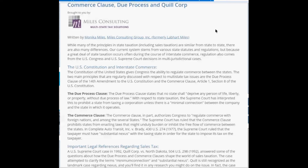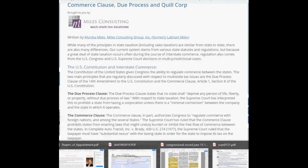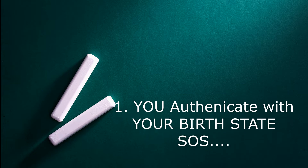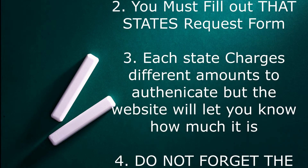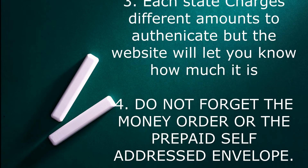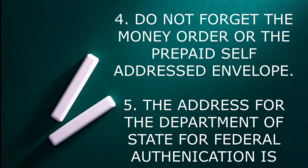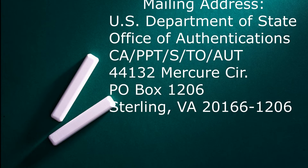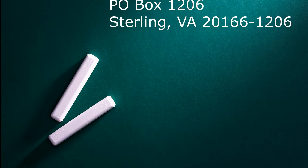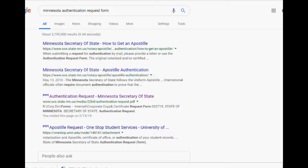This is a very good synopsis of that. But I want to make sure everybody is doing their birth certificate authentication correctly, so we're going to go through those forms. The first thing you want to do when you authenticate your birth certificate is authenticate it through the state in which you were born. So if you were born in Arizona, then you would send your birth certificate with Arizona's authentication form.